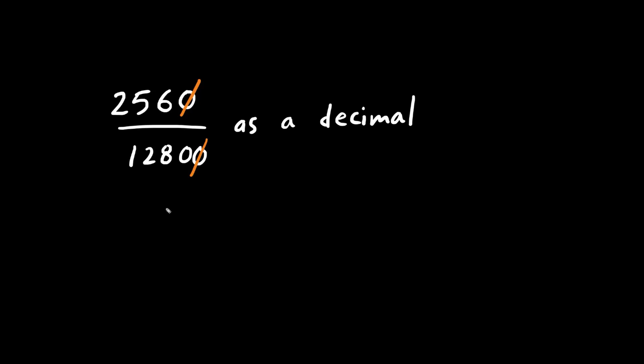One clever technique is to break this fraction into two parts. So we have 256 over 128 times 1 over 10. Remember that when we have two fractions, we multiply across. So 128 times 10 is 1280. So these are equivalent.